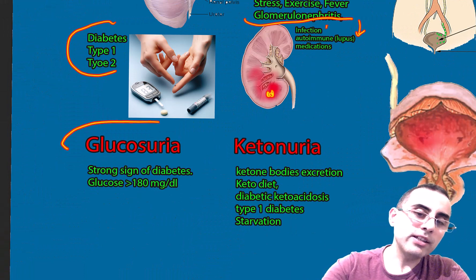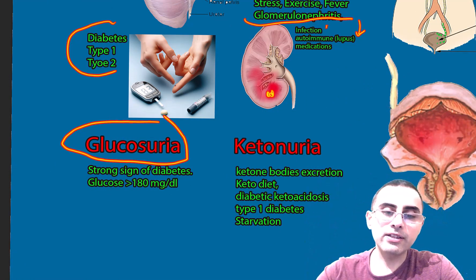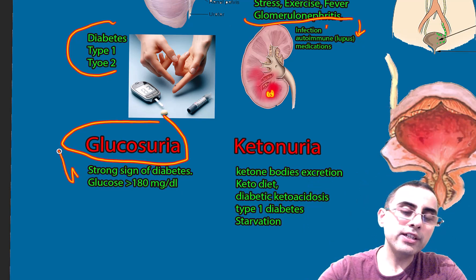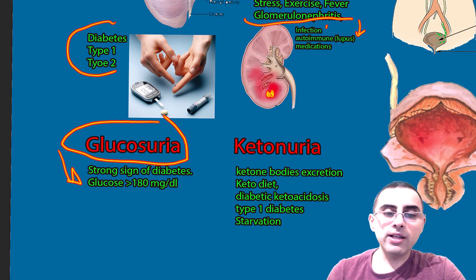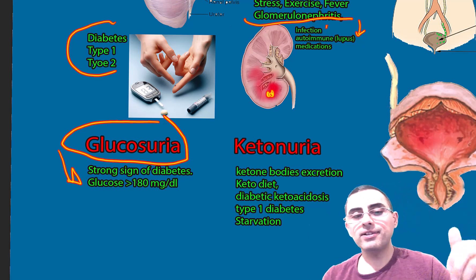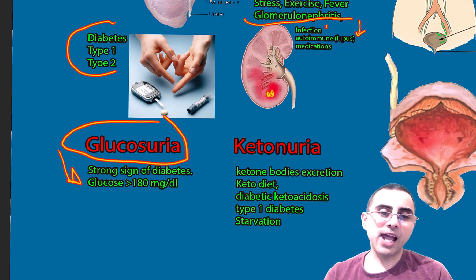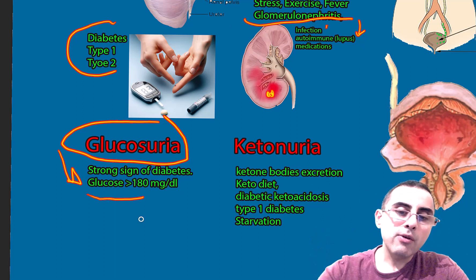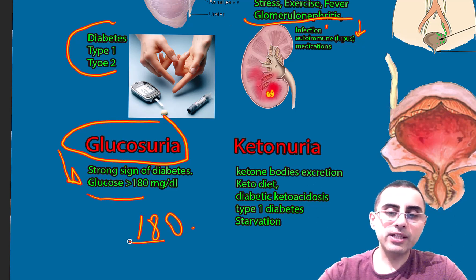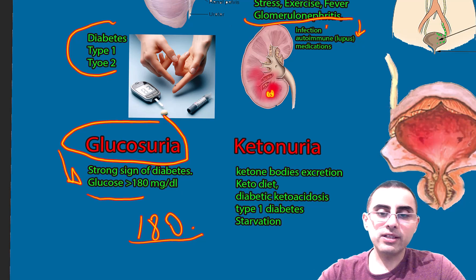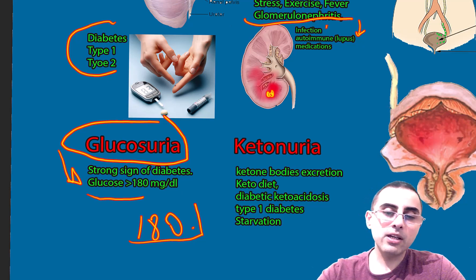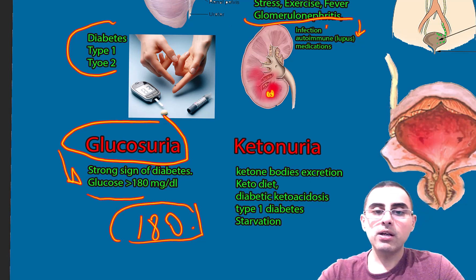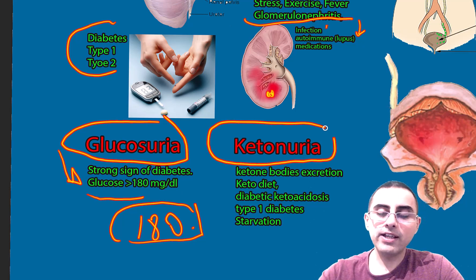Glucosuria is another abnormal urine finding, meaning glucose is present in the urine. It usually indicates diabetes, since glucose must reach approximately 180 mg/dL or more to appear in the urine. It is common among diabetic patients whose glucose levels are not well controlled.